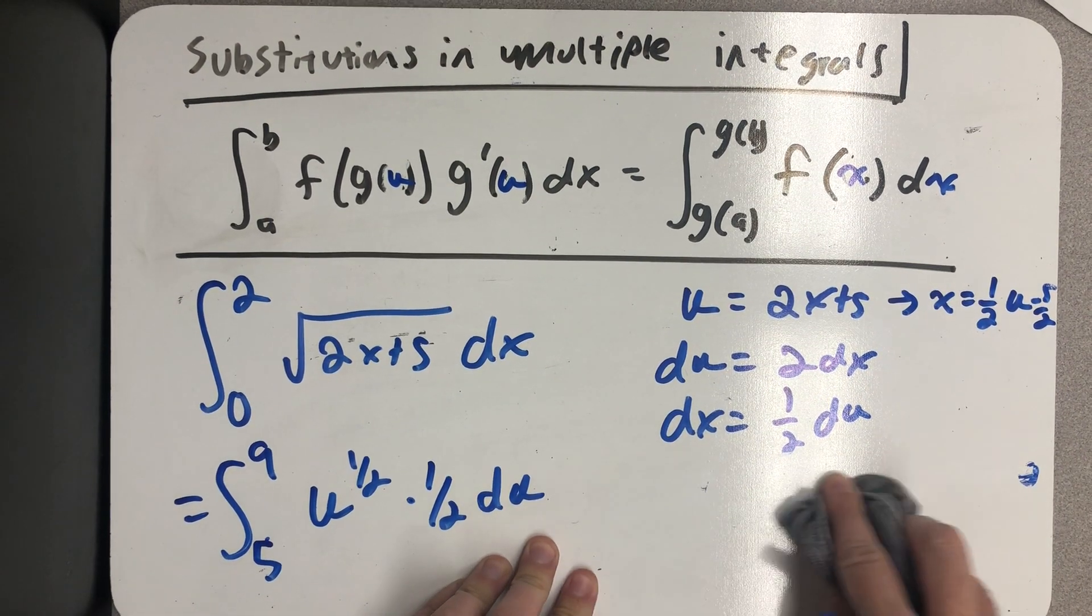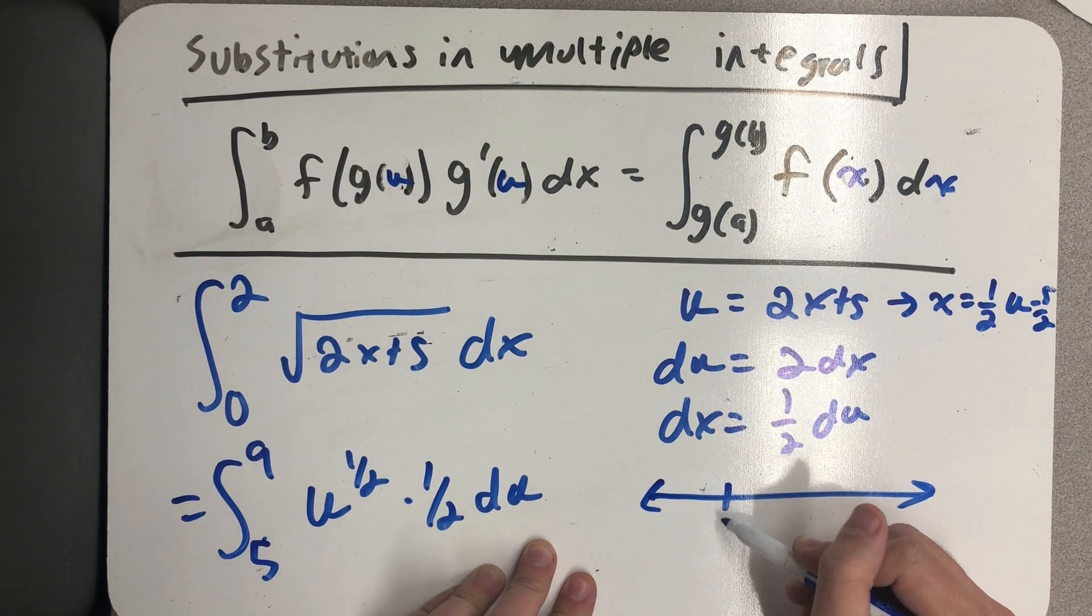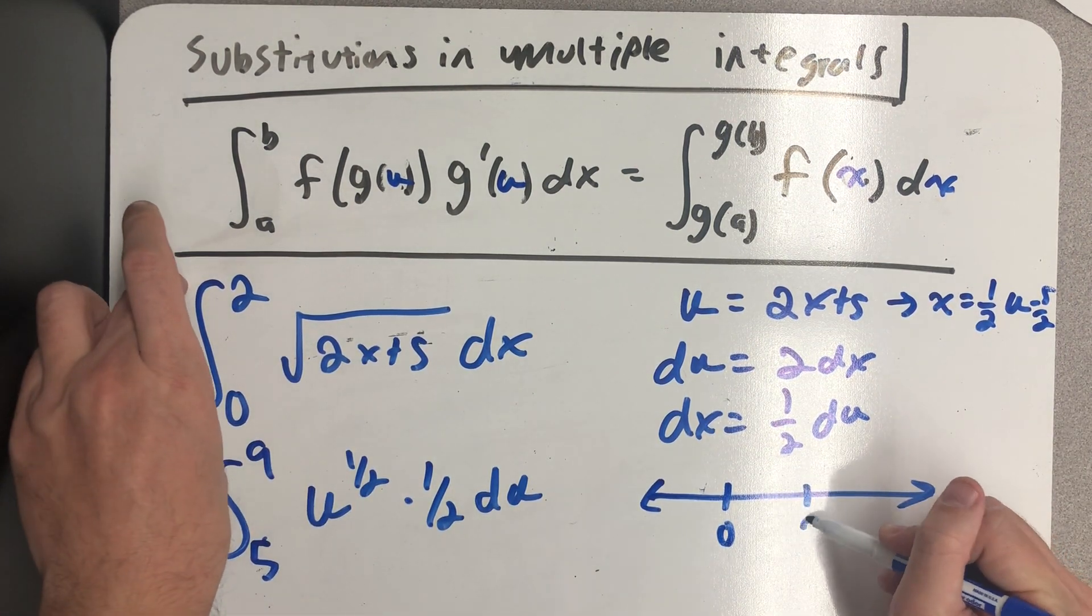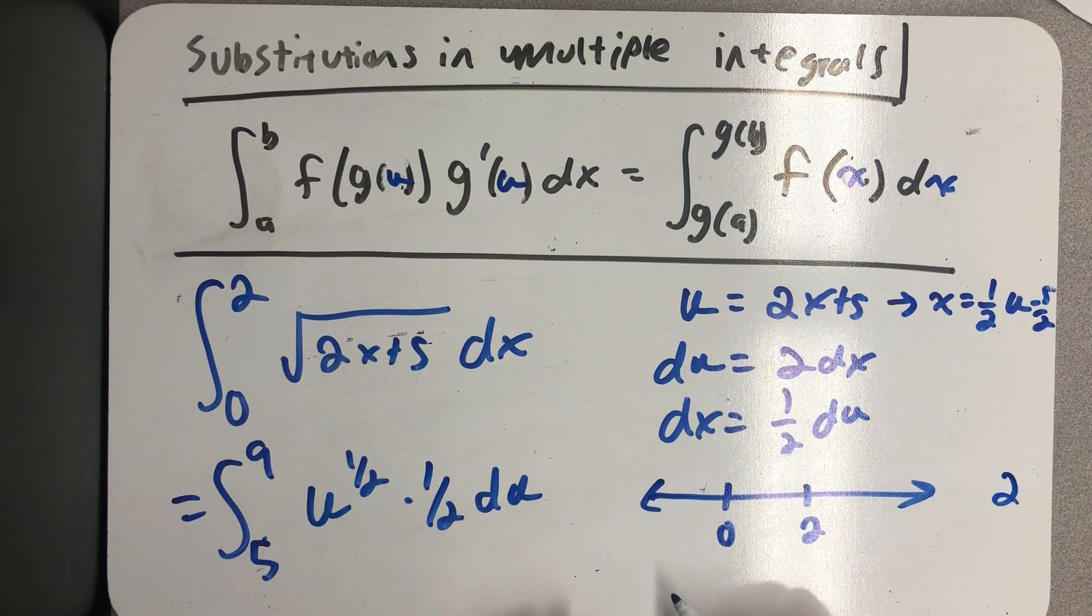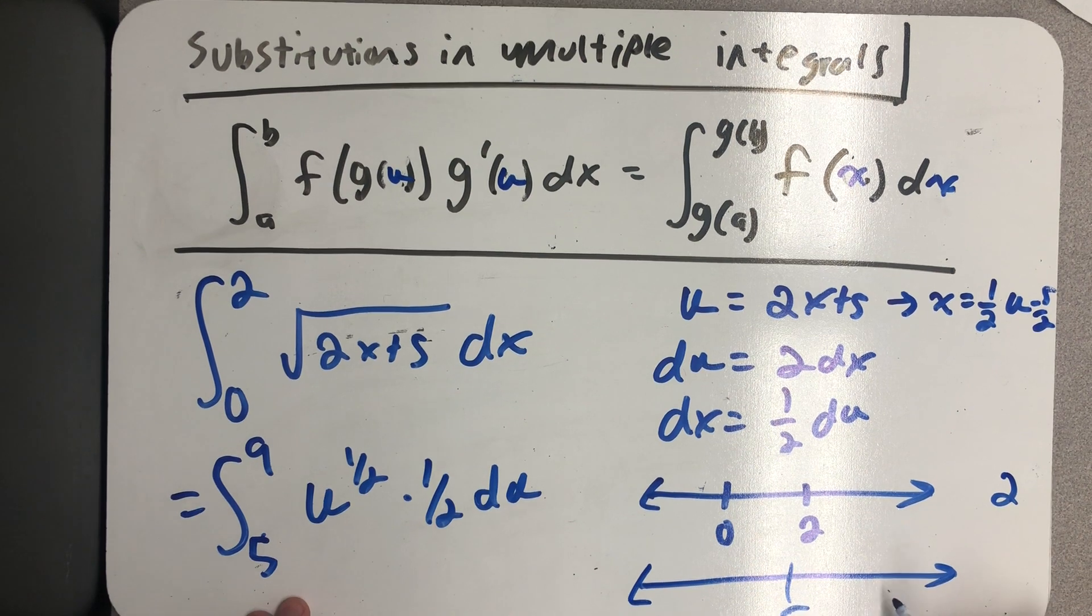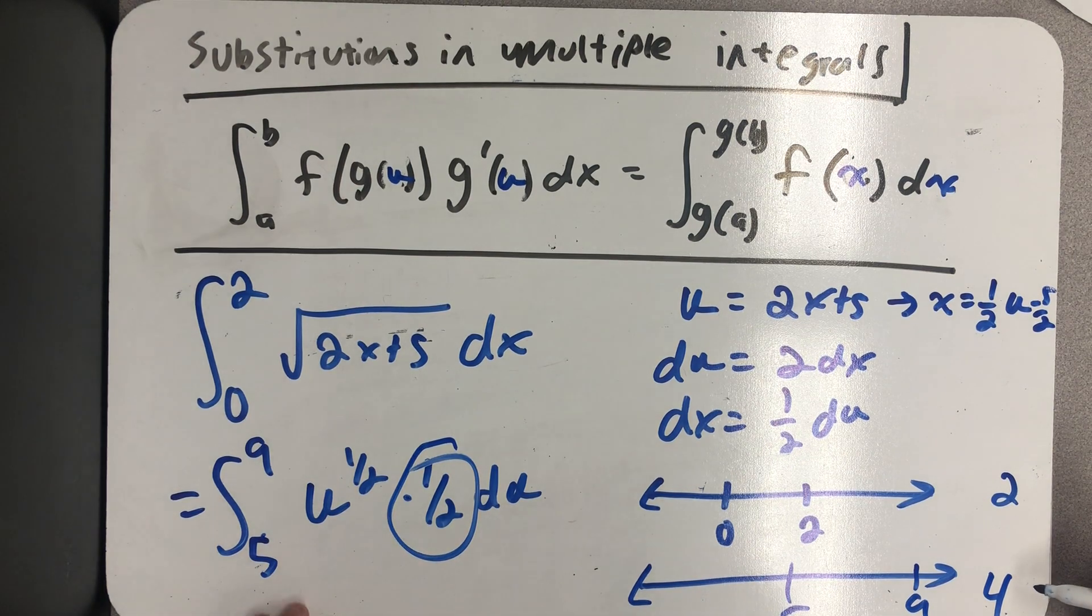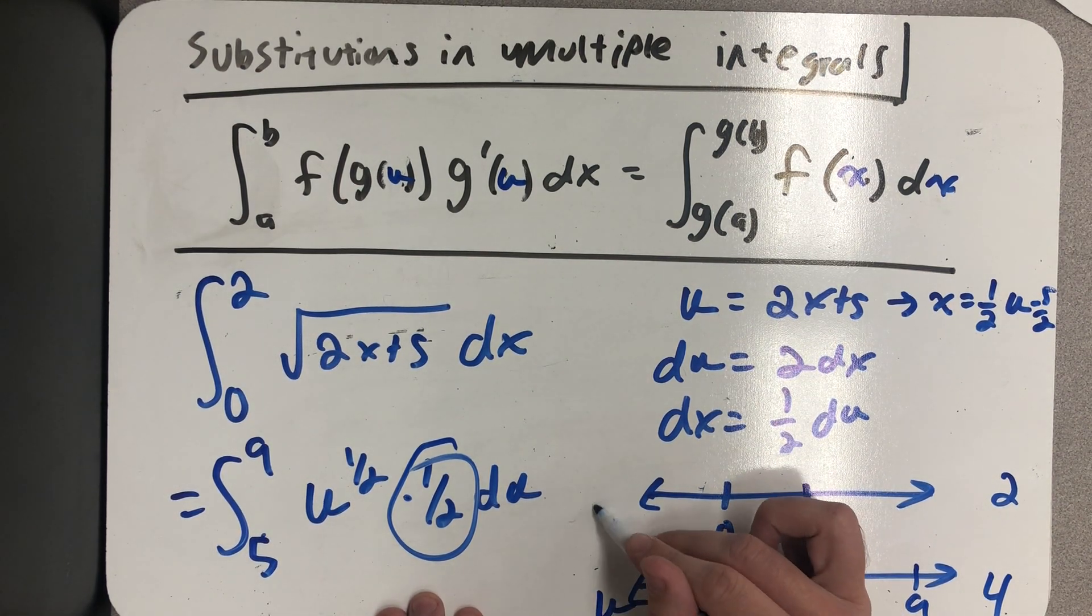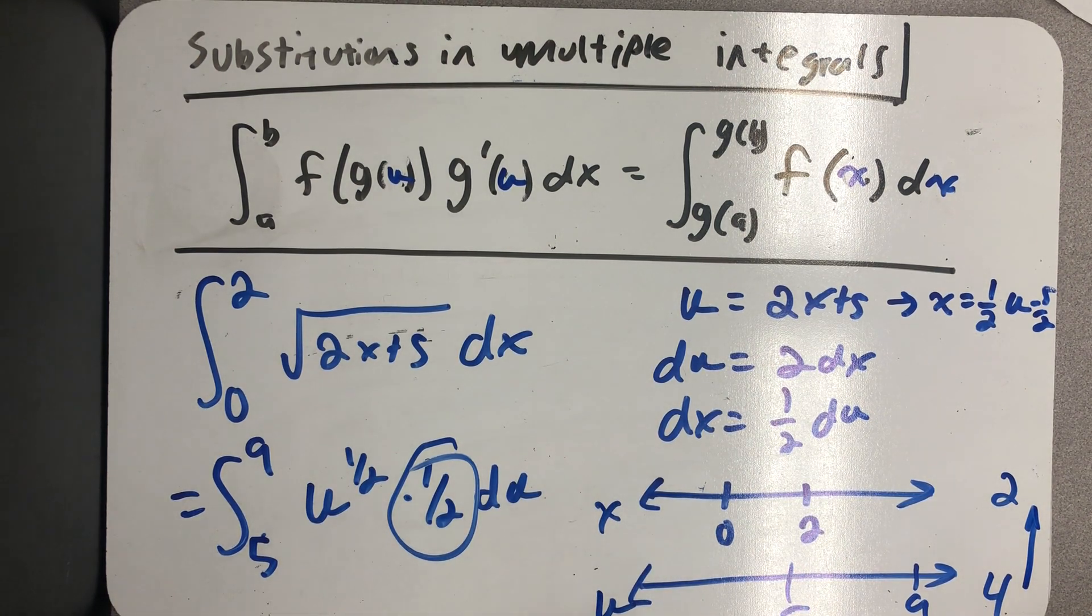One other thing I want to point out is that if I think about this interval, it was the interval from zero to two, very clearly it is two units long. This interval is the interval from five to nine, which is four units long. And what I realize is that this is the scaling factor to go from the u's back to the x's, that it's one half as big.